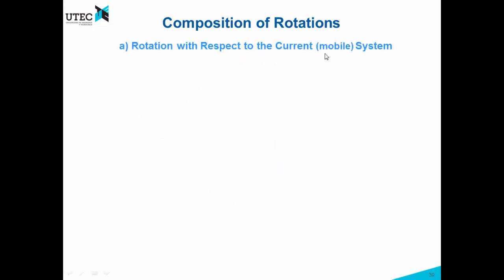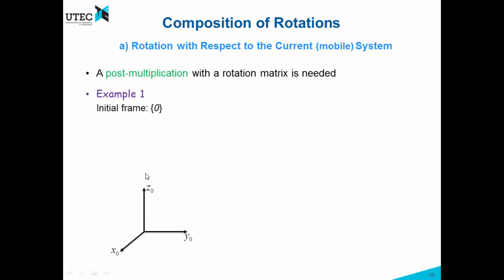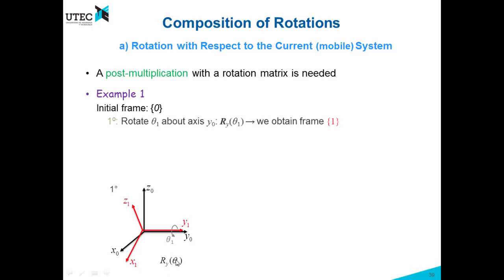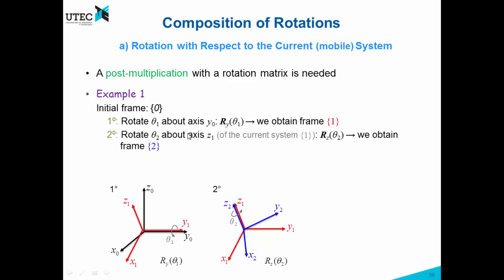Now let's see the rotation with respect to the current or mobile system. In this case, a post-multiplication with a rotation matrix will be needed. Consider an initial frame x0, y0, z0, and let's rotate it about the y axis by an angle of θ1. So first we rotate about y0 and we obtain frame 1, which is a red frame. Now we have this rotated or mobile frame, and we apply a rotation of θ2 about the z axis — but this z axis is the new z axis, i.e., the current z axis.